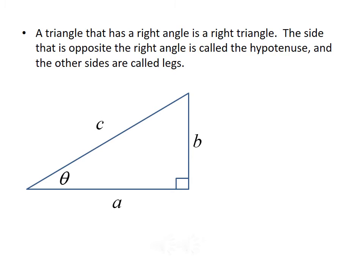Before we can talk about right triangle trigonometry, we have to review some things about right triangles. By definition, a triangle that has a right angle is a right triangle. The side that is opposite the right angle, which is the longest side of the triangle, is called the hypotenuse, and the other sides are called legs. In this figure, we have a triangle with a right angle, side C is our hypotenuse, and sides A and B are legs.